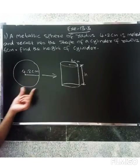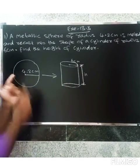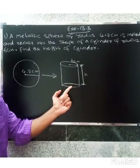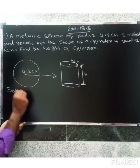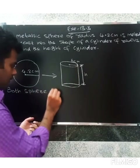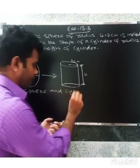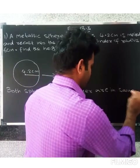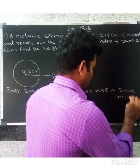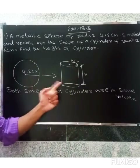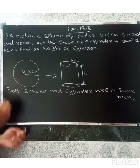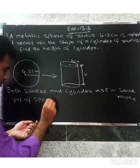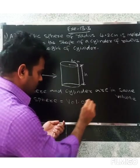Since the volume of material is conserved when the sphere is melted and recast, the volume of the sphere is equal to the volume of the cylinder.